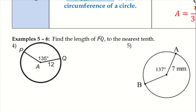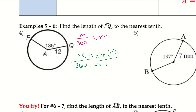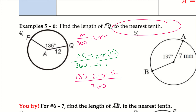Let's take a look at problems 4 and 5. We're using M over 360 times 2πR. For problem 4, we have the arc measure of 135, so it's 135 over 360 times 2π times 12. We can just plug this all into a calculator — 135 times 2 times π times 12 all over 360. Once we do that, the length of the arc is approximately 28.3.